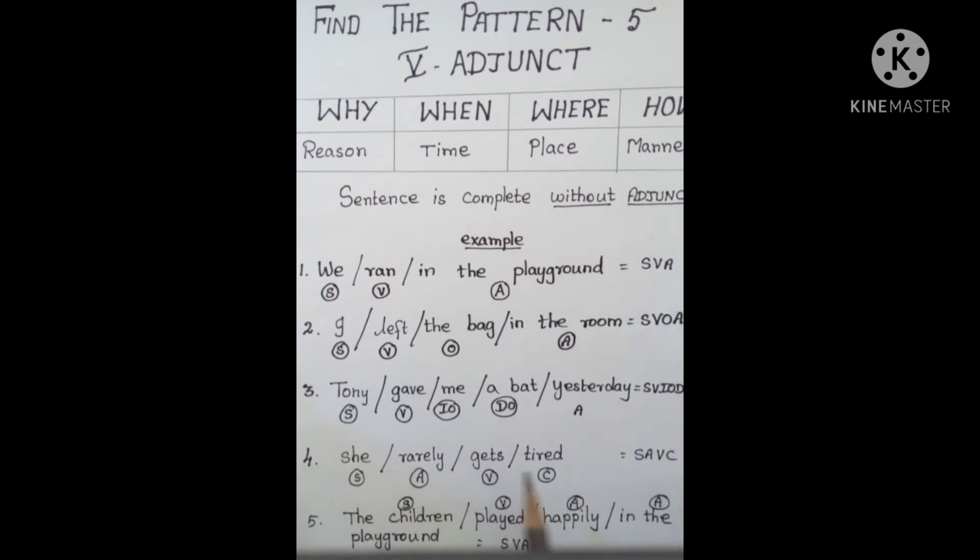She gets tired. Tired is the complement. If you remove rarely, the sentence still has meaning: she gets tired. That's why this sentence is S A V C.